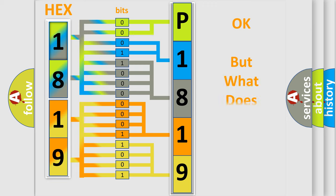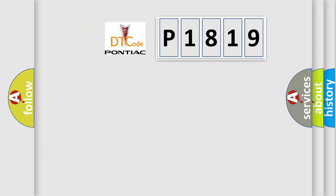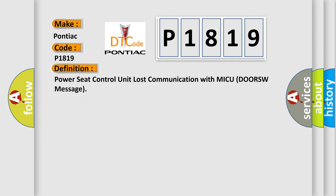We now know in what way the diagnostic tool translates the received information into a more comprehensible format. The number itself does not make sense to us if we cannot assign information about what it actually expresses. So, what does the diagnostic trouble code P1819 interpret specifically for Pontiac car manufacturers? The basic definition is: Power seat control unit lost communication with MICUDORSW message.